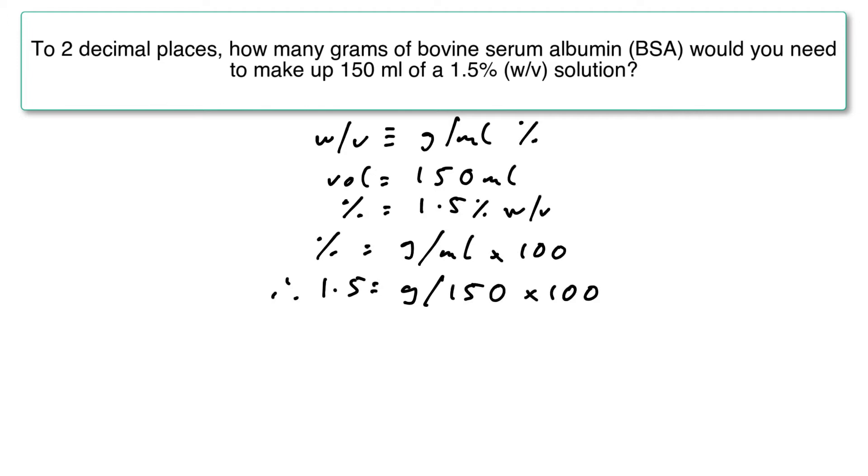If we rearrange this equation, we move the 100 over to the left. So that becomes 1.5 divided by 100 is equal to the number of grams divided by 150. Next, we move the 150 over. So we get 1.5 divided by 100 multiplied by 150.